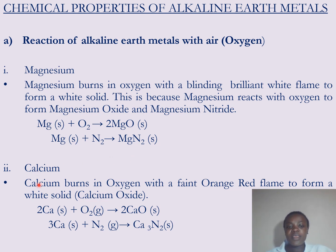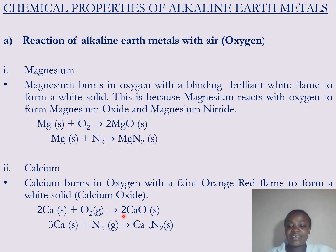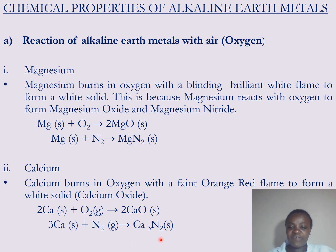We look at calcium. Calcium reacts with oxygen to form a white solid of calcium oxide. Calcium is also a reactive metal, so it reacts with nitrogen as well to form calcium nitride. Here is the chemical equation between calcium and nitrogen to give calcium nitride. That is the first chemical property.